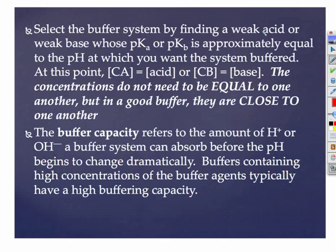Let's take a look at some possibilities. We want to select a buffer system, and we're going to do it by finding a weak acid whose pKa is close to the pH at which we want to buffer. Conversely, we can use a weak base system, at which point the pKb is going to be equal to the pOH.